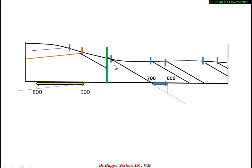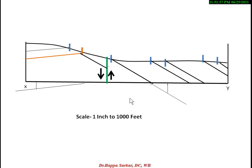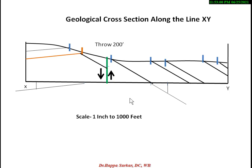This is the down-throw side and this is the up-throw side. Use the index scale and prepare the index. This is the completed geological section for a fault map. In this way you may solve all fault structure geological maps. Thank you.